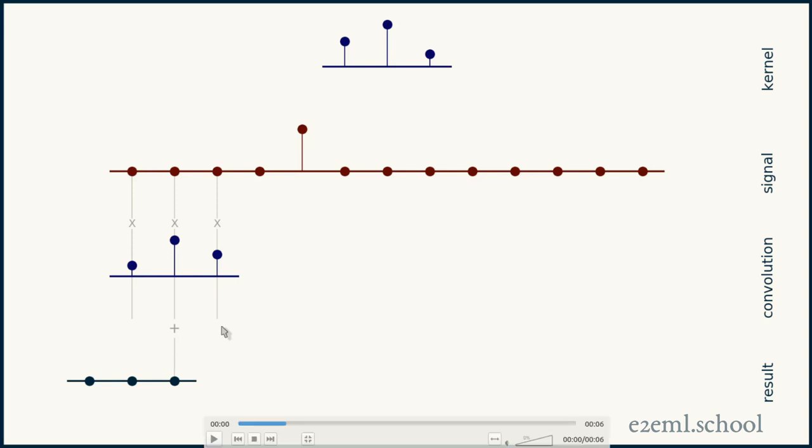So for instance, in this location, the kernel lines up with these three values of the signal, but they're all equal to zero. They all sit exactly on the line. So even though the kernel has positive values for all those, they all get multiplied by zero and added together, giving a result of zero. So the convolution at that point will be zero.